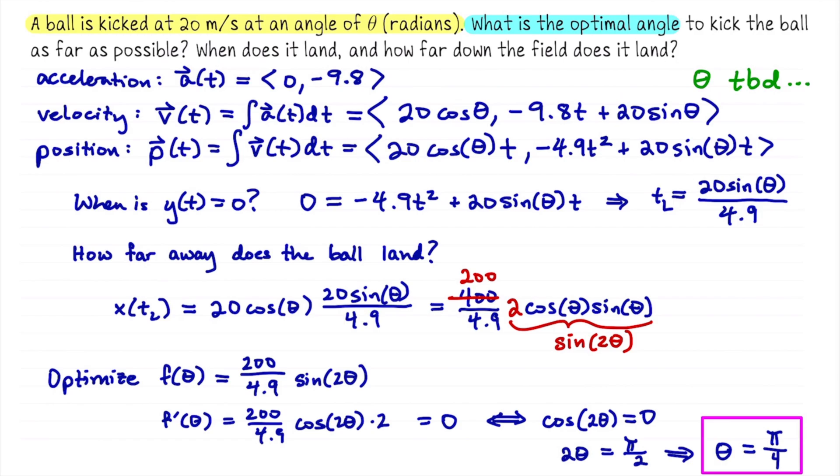All right, now that we have the optimal angle as pi over 4, we just need to plug it into the expressions for the landing time and the landing place. Let me see if I can do that in a way that's not too messy. I'm just going to add it to my expression up here for the landing time. Sine of theta is square root of 2 over 2. So if I multiply that by 20 over 4.9, I'll have 20 square root of 2 over 9.8.